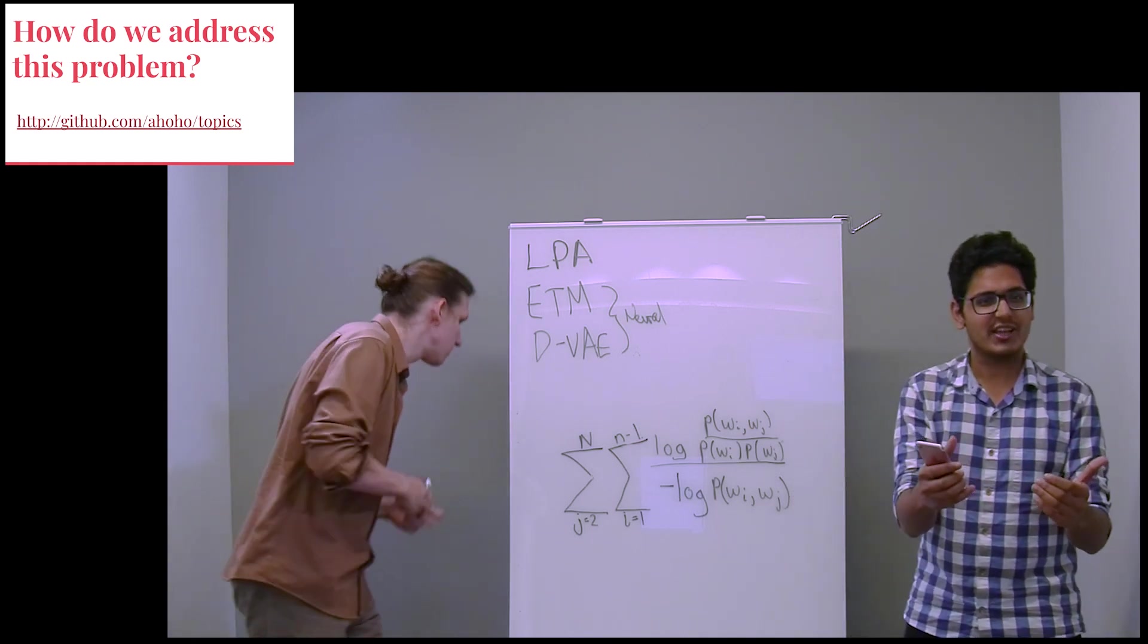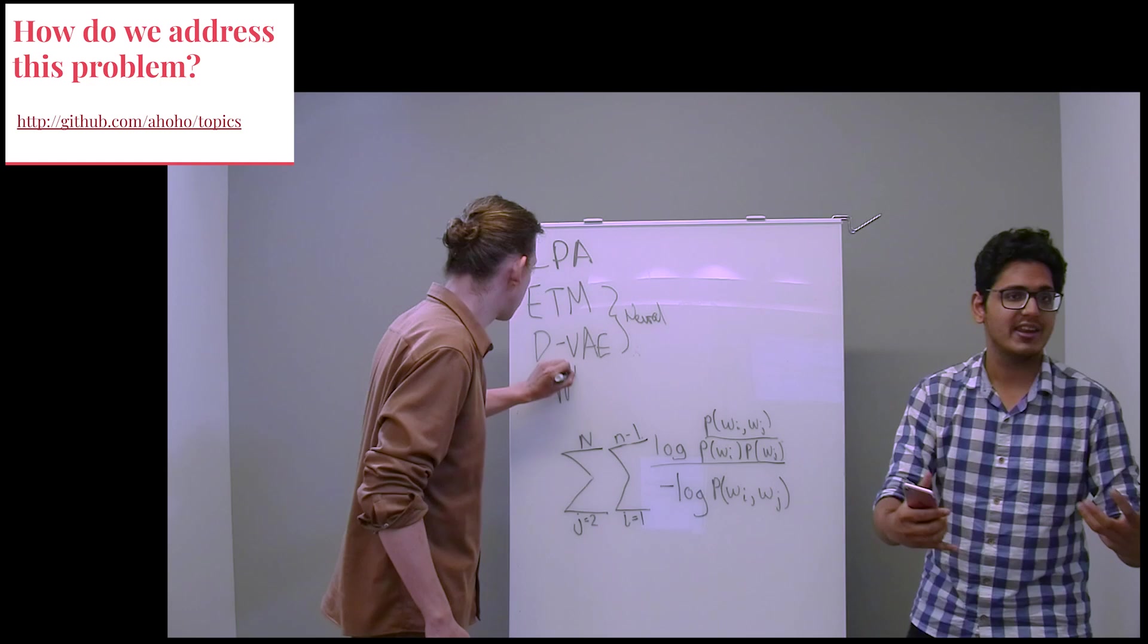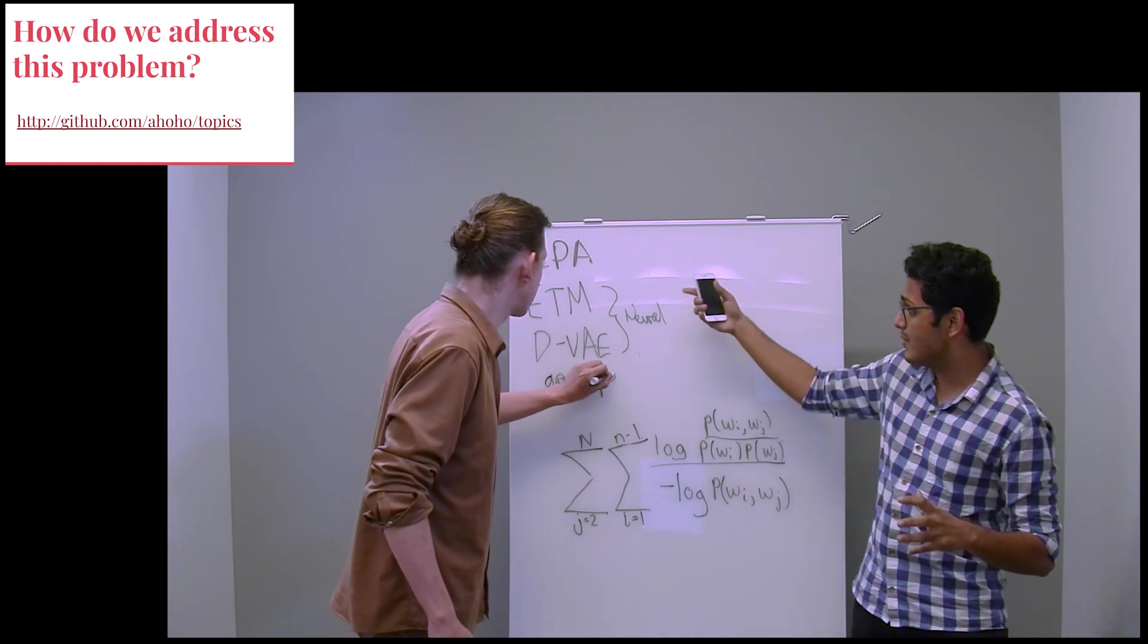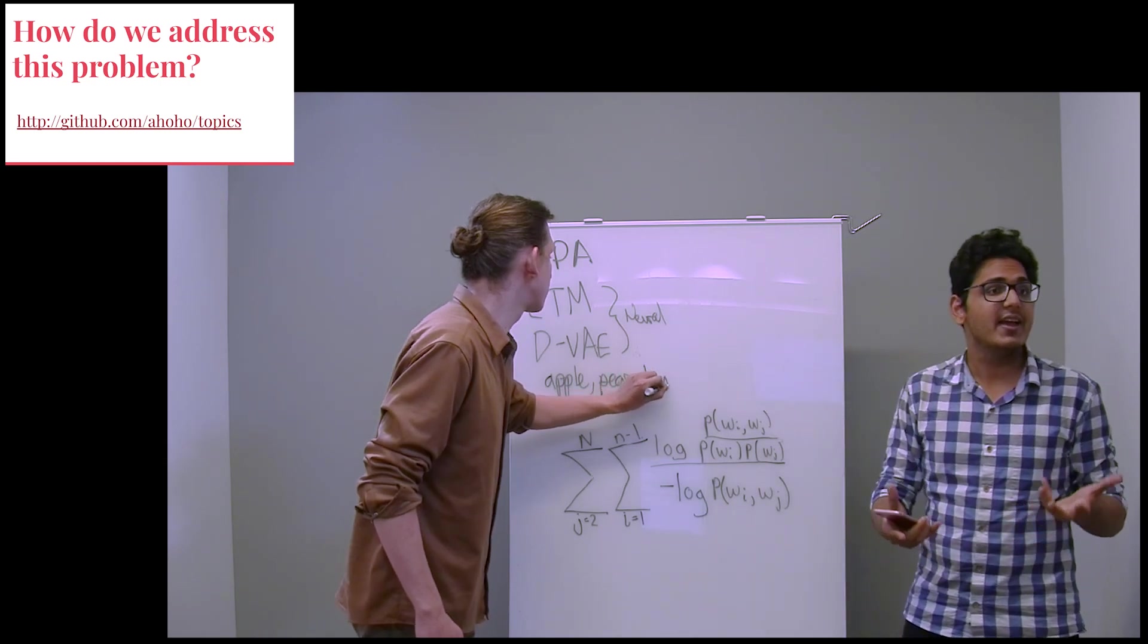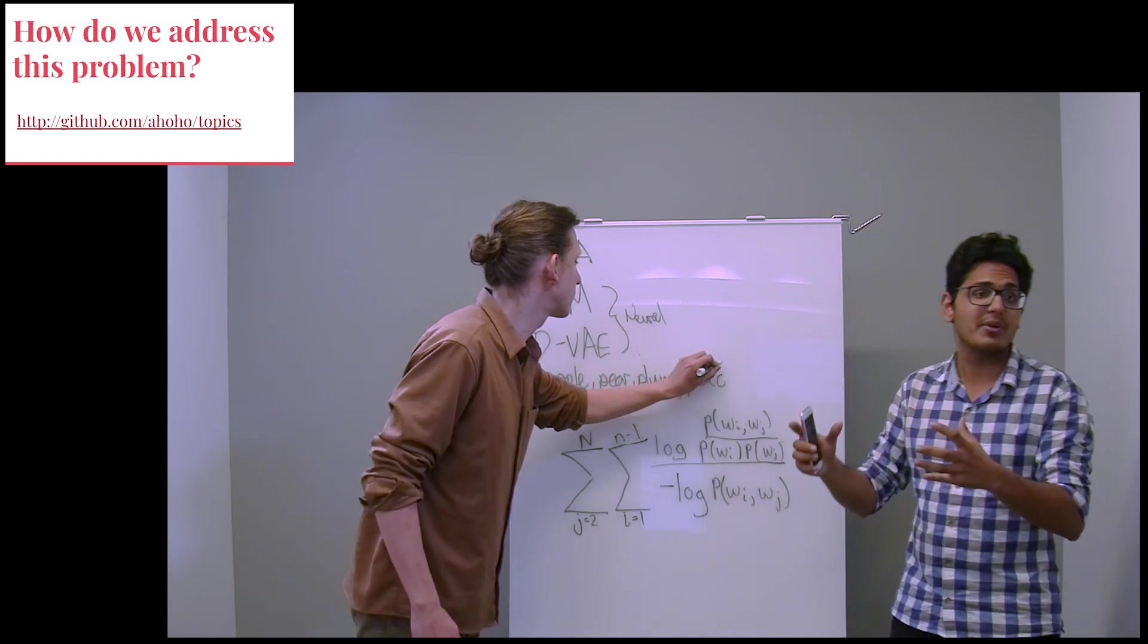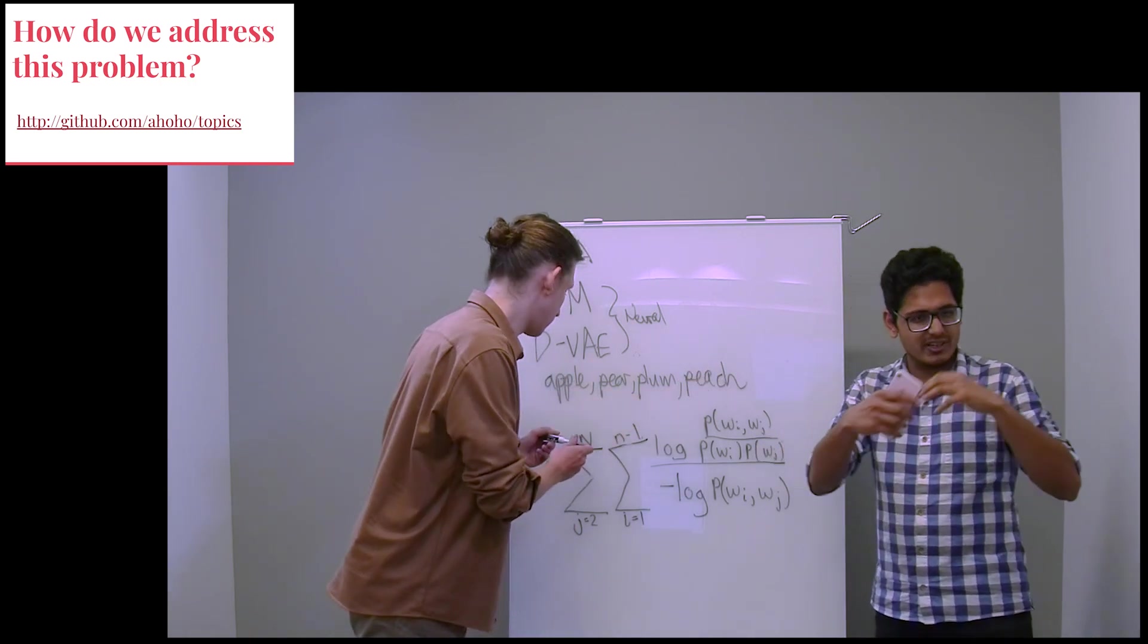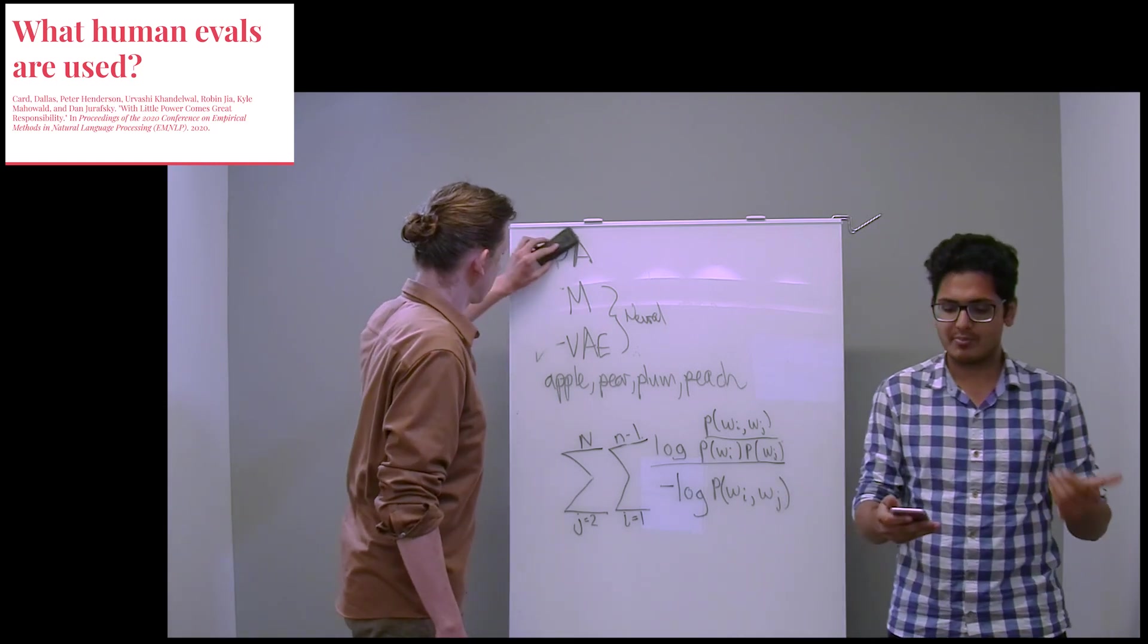And interestingly, by just closing these standardization gaps, so just running these models on the same data set preprocessed the same way and everything, we found that the embedded topic model ended up having a lower NPMI than LDA. And once we had our tuned models that we could compare, we evaluated the resulting topics with two human evaluation tasks, both pulled from prior work.